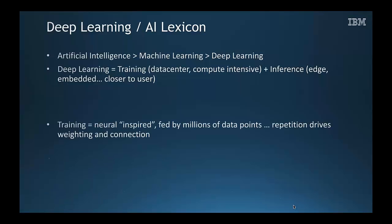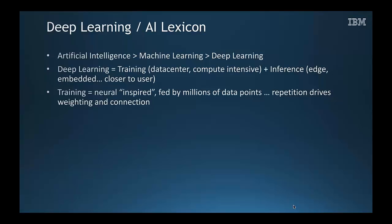Training within deep learning is really what we call neural-inspired because it draws from our understanding of how the mind works. The idea that artificially, within a deep learning system, we can create neural connections and weighting of connections by applying millions and millions of data points to the system. It's really this repetition — repetition of tagged imagery and then unsupervised imagery in the case of image recognition, or language sets in the case of natural language processing — that helps build that weighting connection and therefore the precision and accuracy of the algorithm.